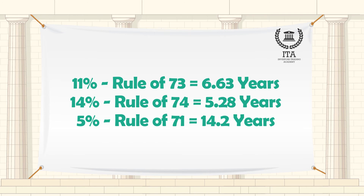So for 11 percent annual compounding interest, the Rule of 73 is more appropriate. For 14 percent, it will be the Rule of 74. For 5 percent, the Rule of 71.